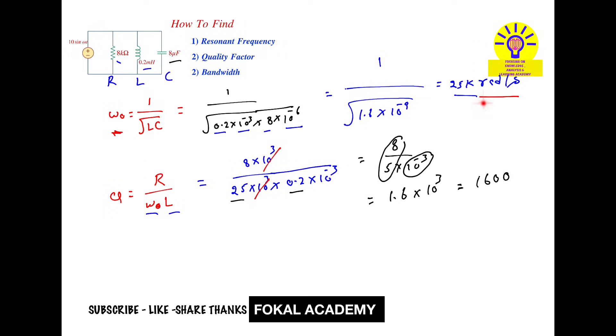Now we've got frequency and quality factor. Final one is bandwidth. What is bandwidth? Bandwidth depends upon resonant frequency and quality factor. Simply we can say the ratio between the resonant frequency to the quality factor is bandwidth.